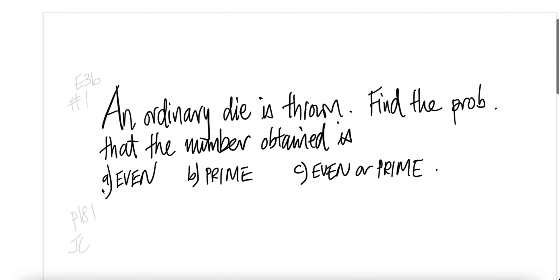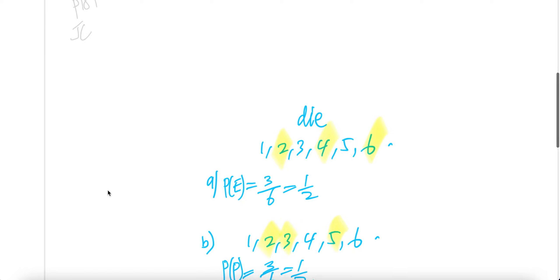Now the first part A asks for even. Even is two, four, and six. So there are three even numbers you can get: two, four, or six. So you get three divided by total number of possibilities is six. This will get you half.